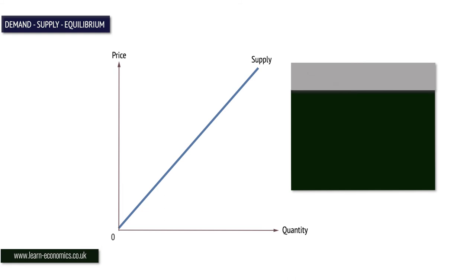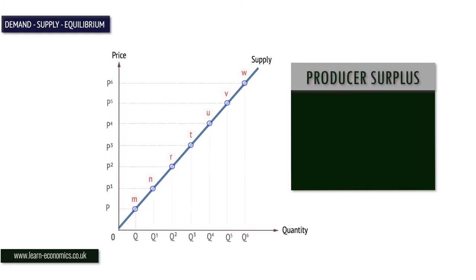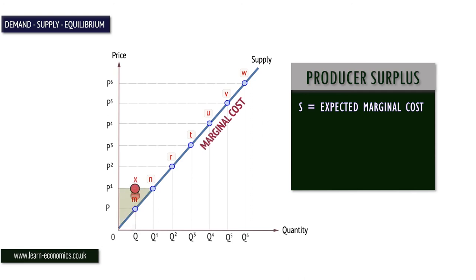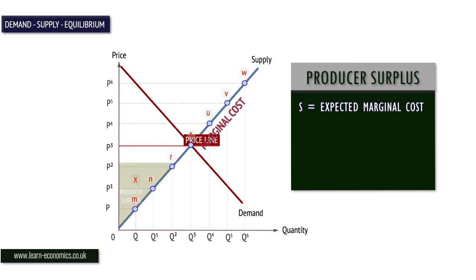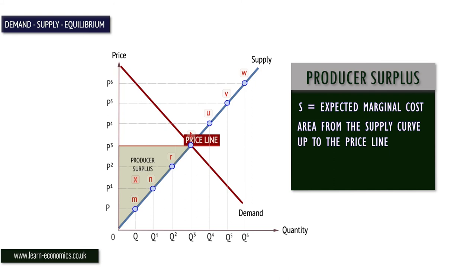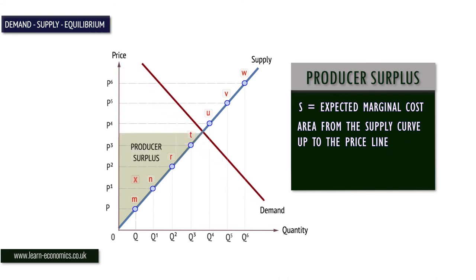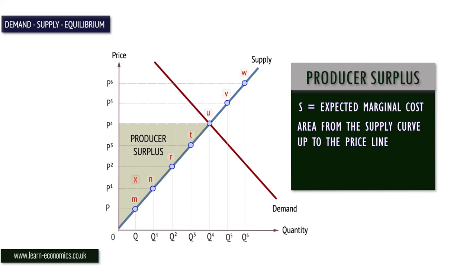Producer surplus is the additional benefit to producers when the price they receive is more than the minimum they are prepared to receive. A supply curve reflects the expected marginal costs incurred by producers when supplying goods and services. Covering costs is essential for firms. If the firm produces Q units, the marginal cost is at M. However, if the market price is P1, producer surplus of M to X is gained. Graphically, producer surplus is the area from the supply curve to the price line. Producer surplus is gained whenever revenue exceeds the minimum necessary to cover marginal cost. The higher the price, the greater the area of producer surplus.